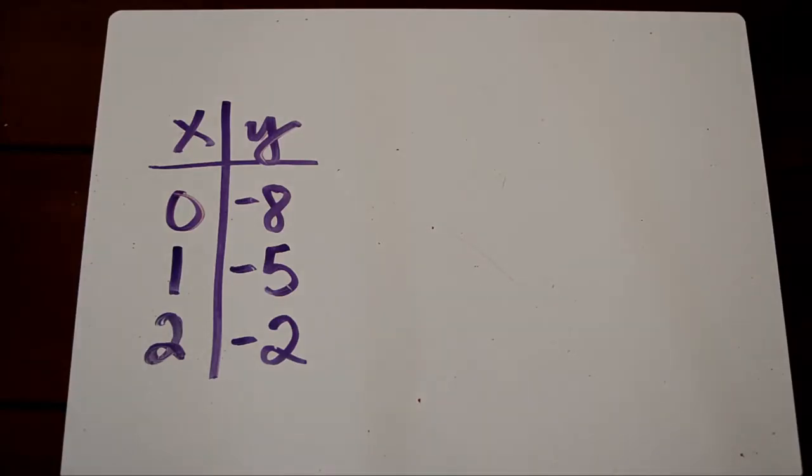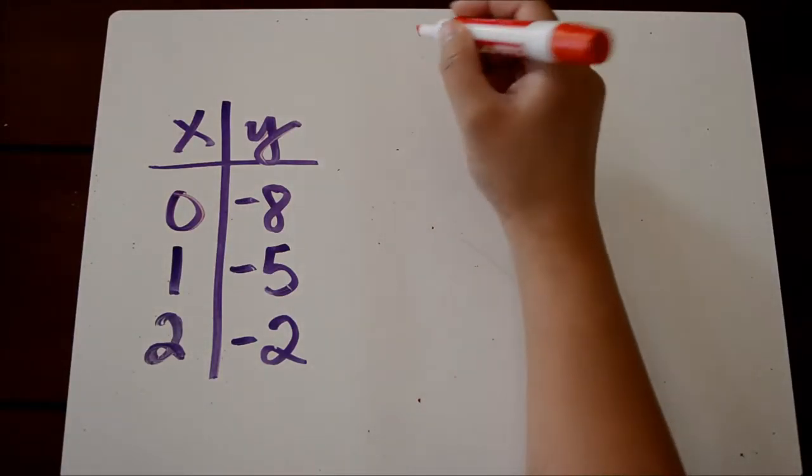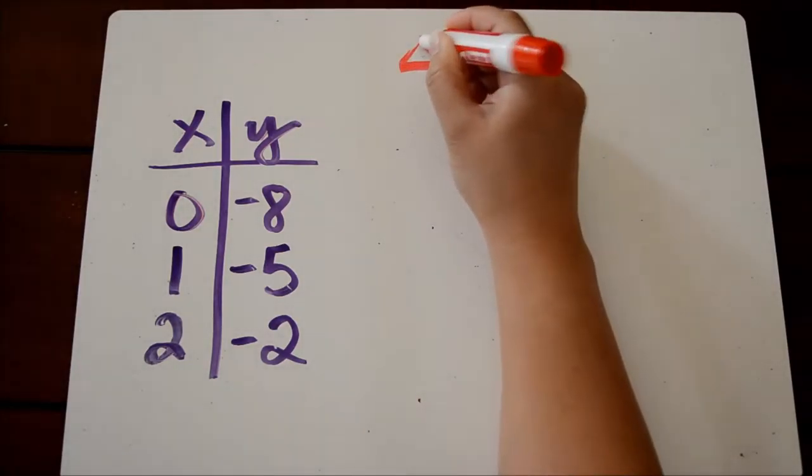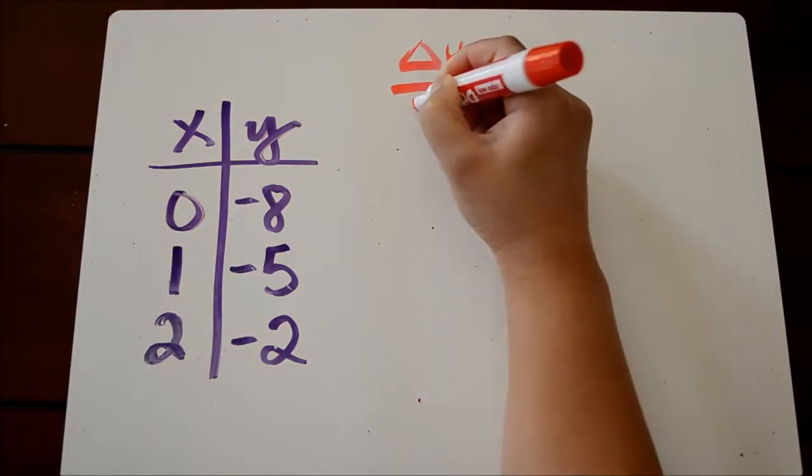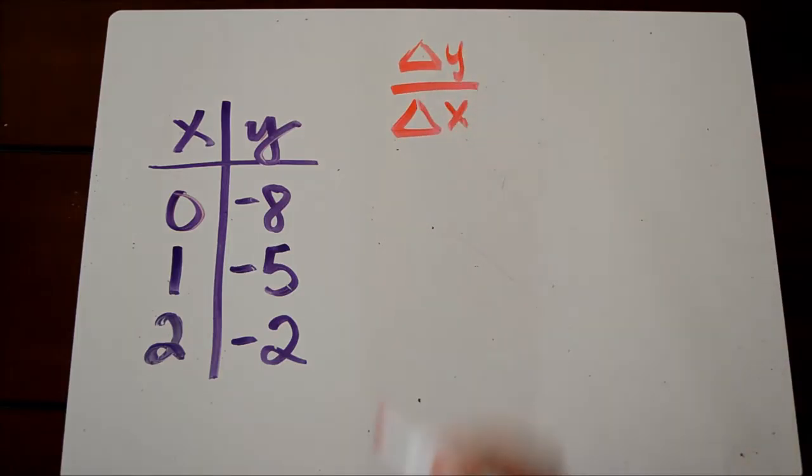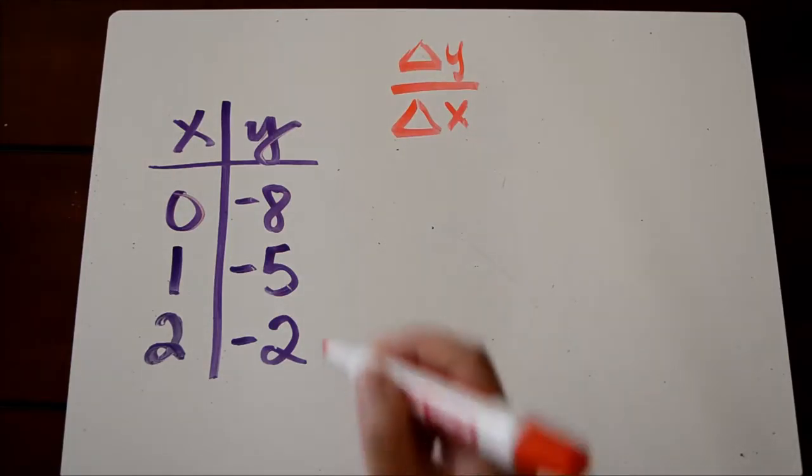So here we have a table of values. A lot of teachers teach what's called finding the change in y over the change in x. This is our delta y and this is our delta x, and delta means change. We could choose any two points on our table. I'm just going to choose the first two points.